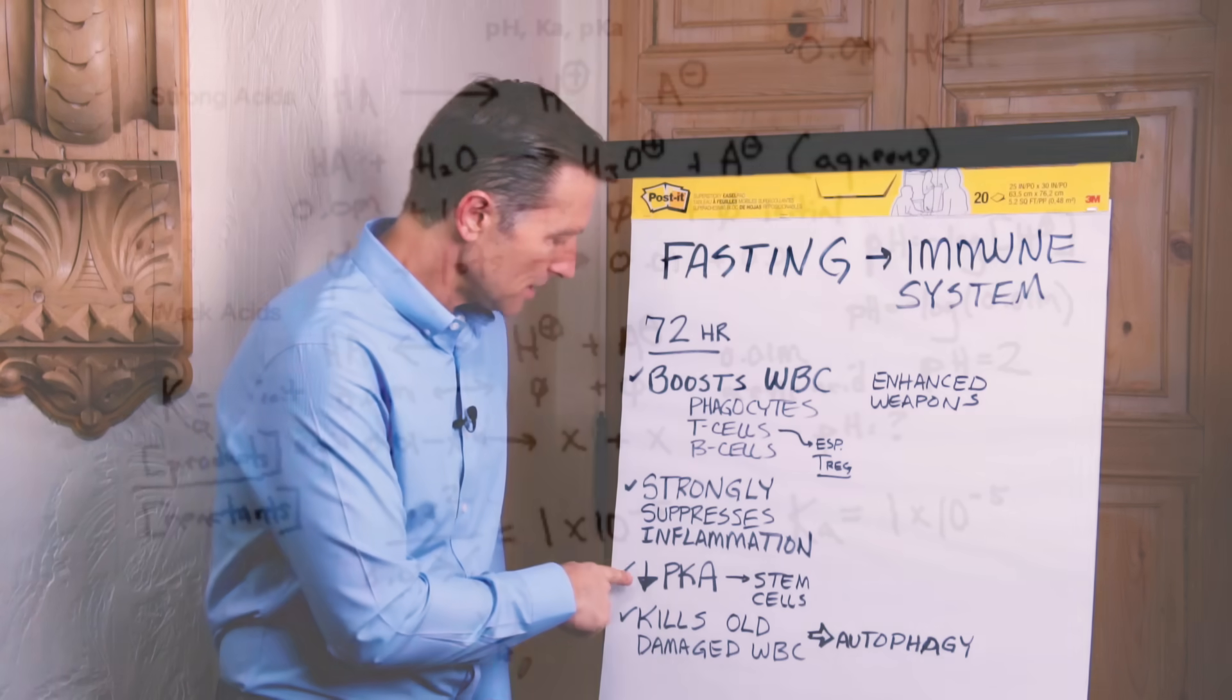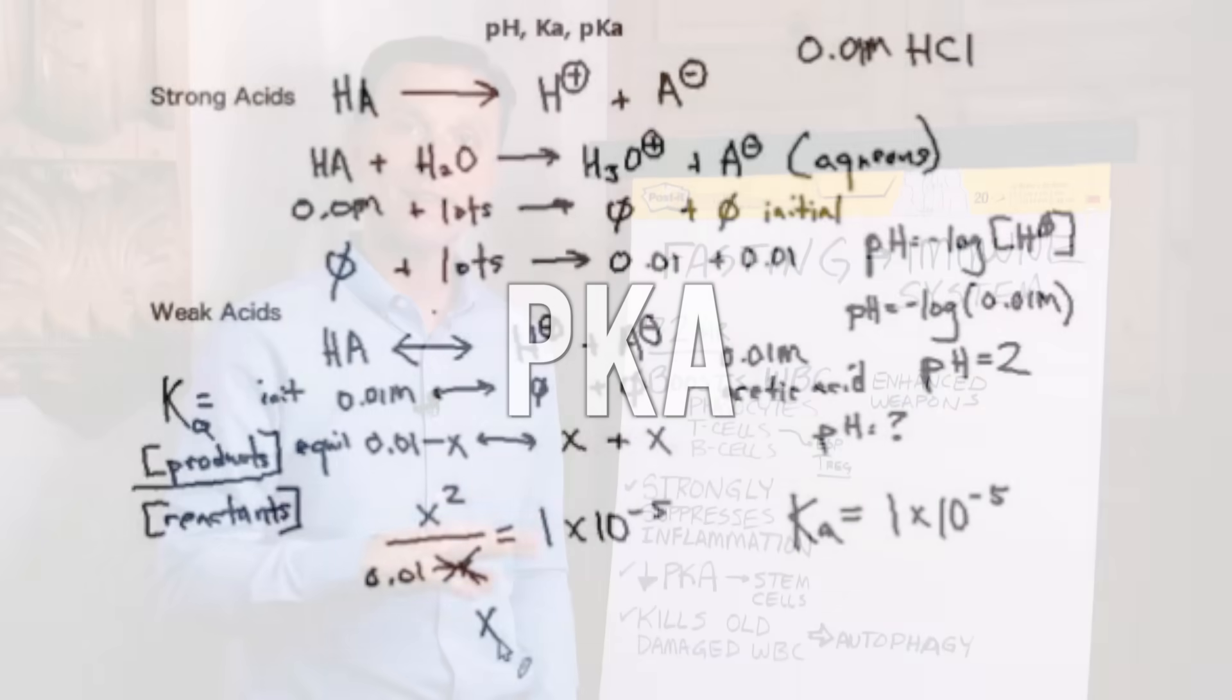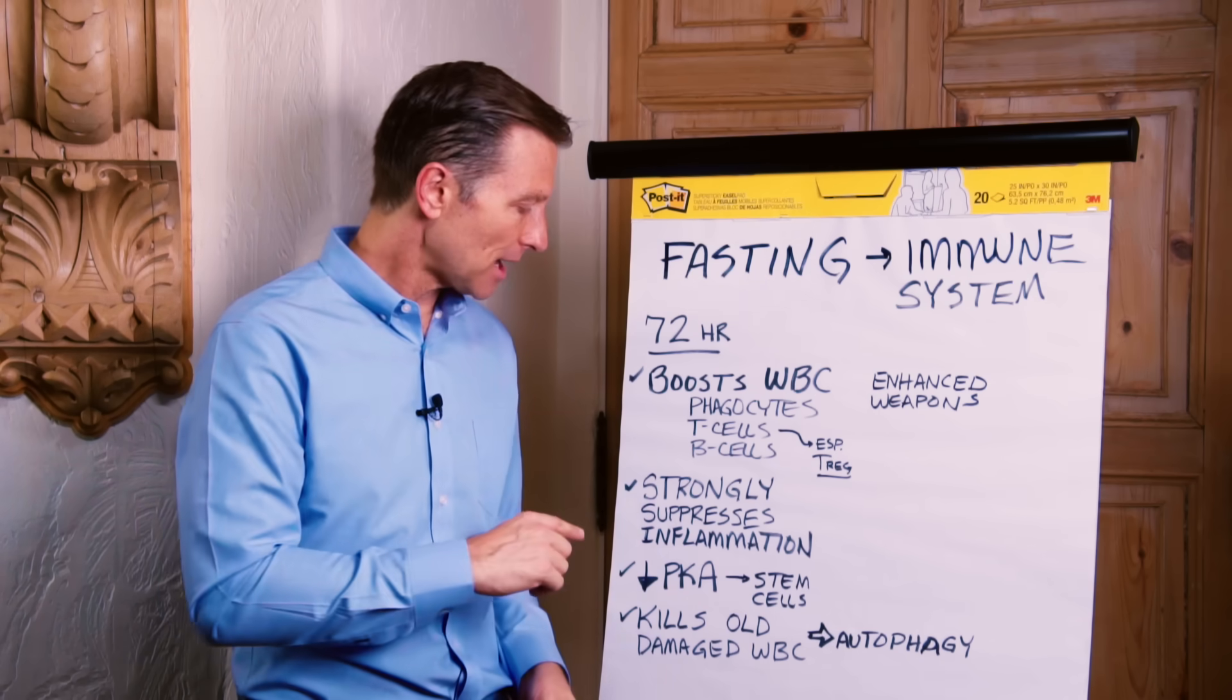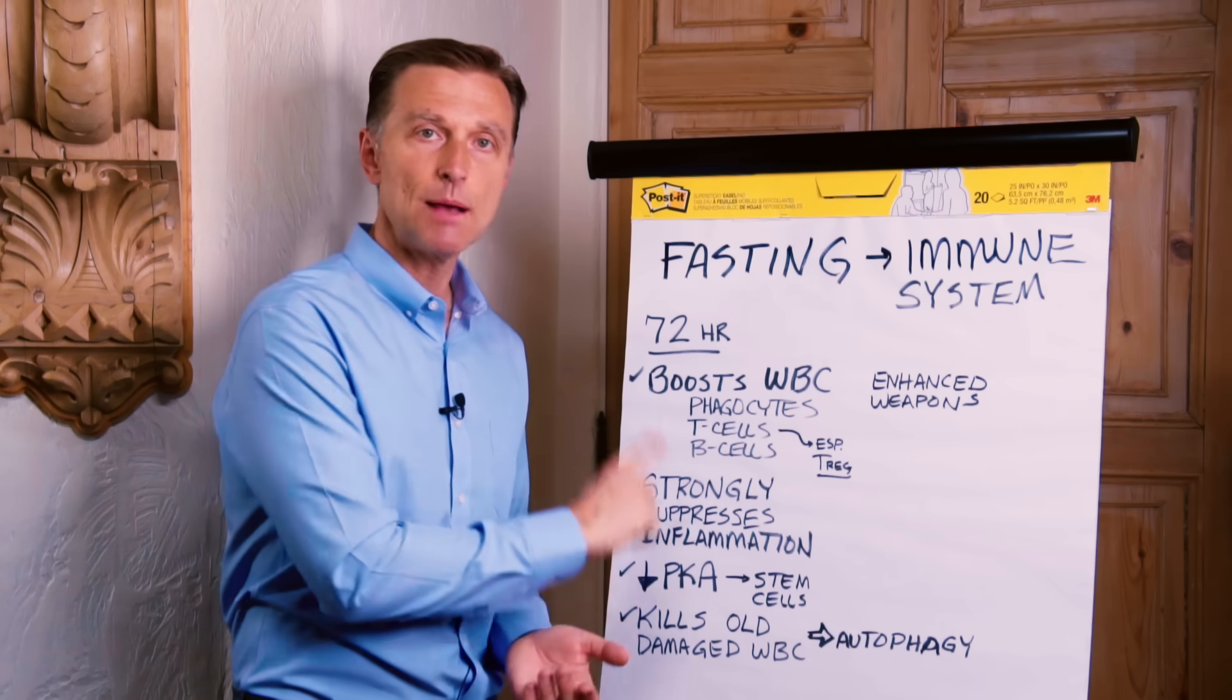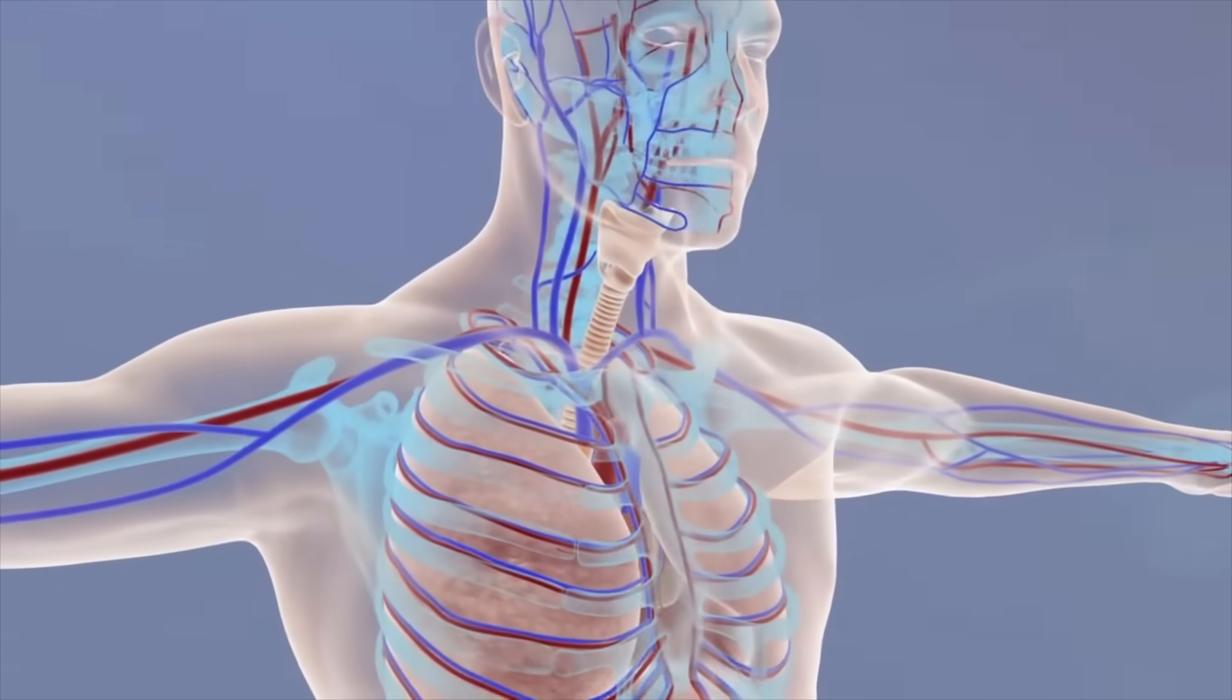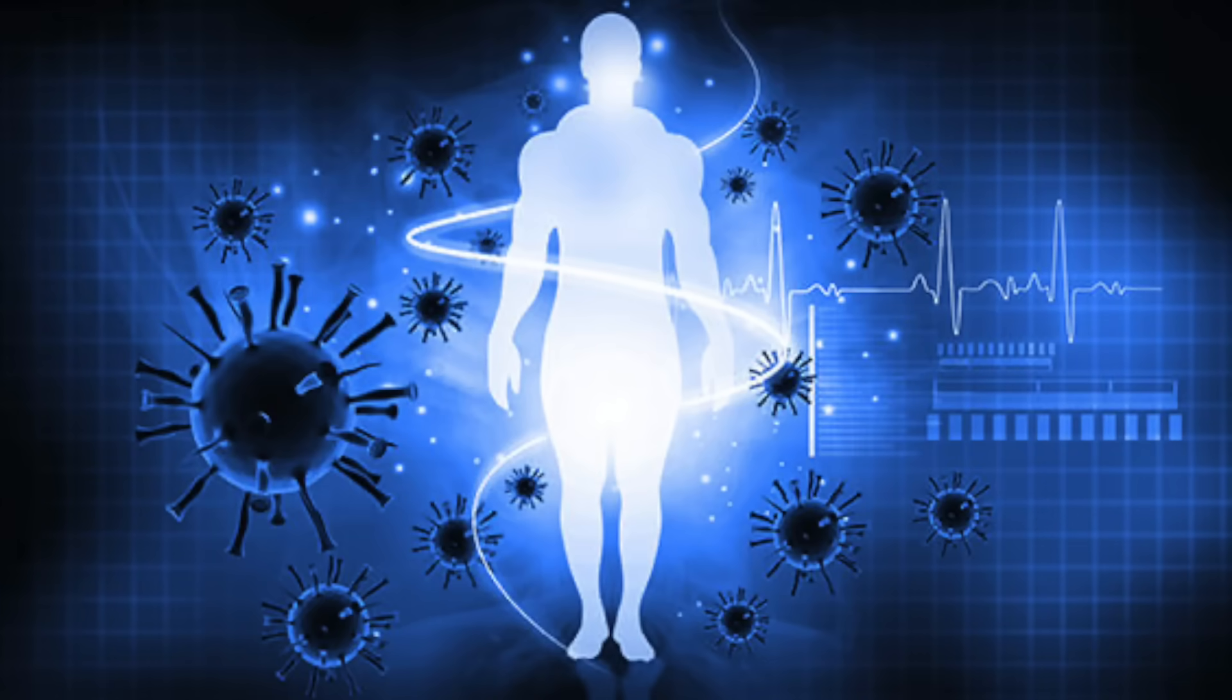Now it also decreases something called PKA. I'm not going to get into the weeds with what that compound is. All you need to know is that this compound needs to be inactivated for the stem cells to be activated. And stem cells are the things that are recruited from various parts of your body, especially the bone marrow, to start to build a new immune system.